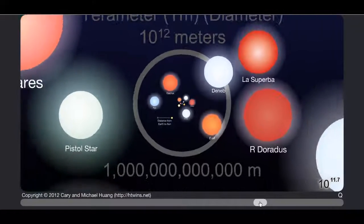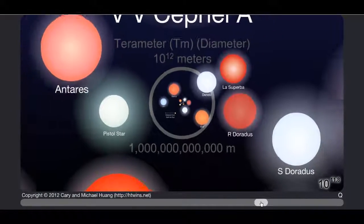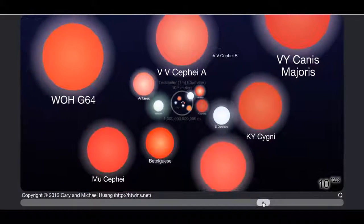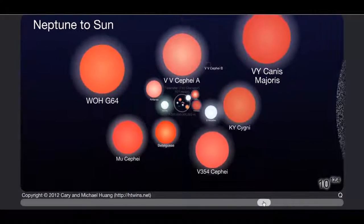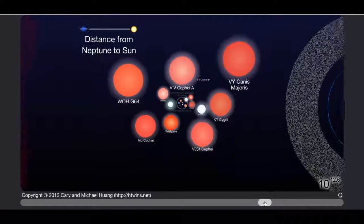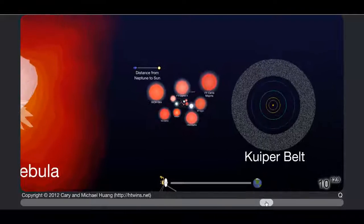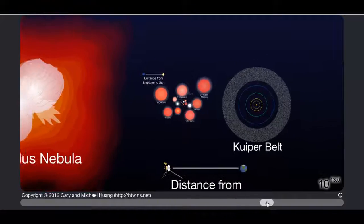These things are huge. Pistol star. VY Canis Majoris. Wow. Oh it's not big, I haven't been this far out before so this is all new to me. Distance from Neptune to the sun. Kuiper belt, that's the thing that surrounds the solar system I believe. Distance from Voyager 1 to Earth.